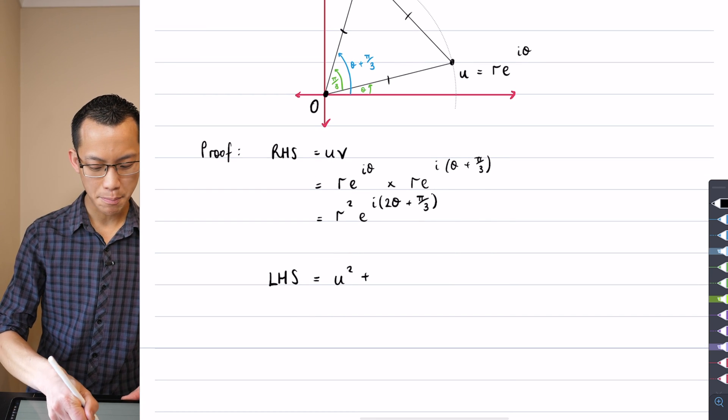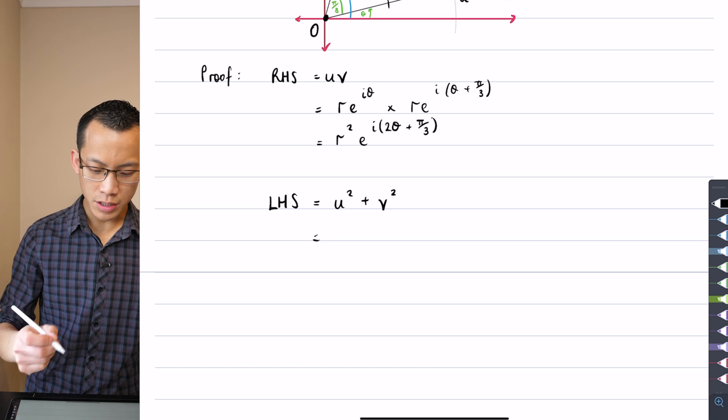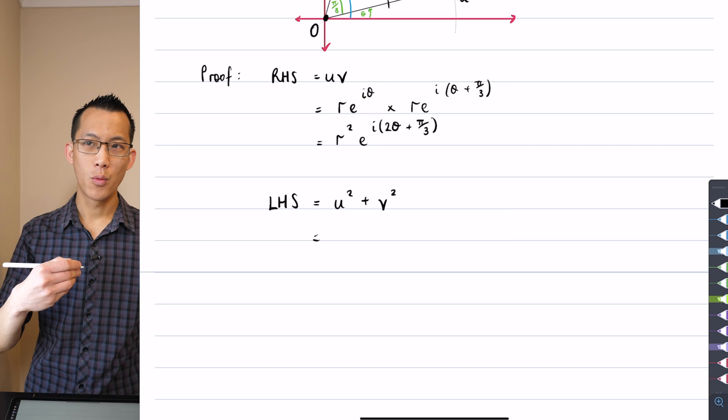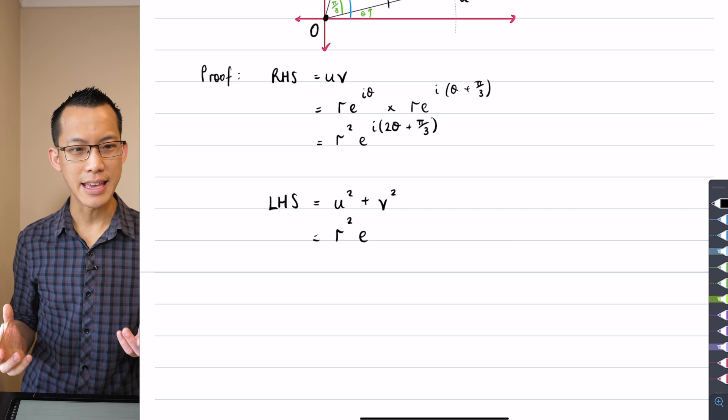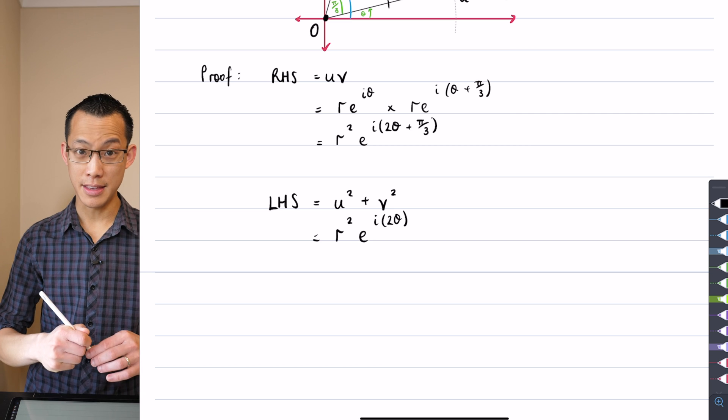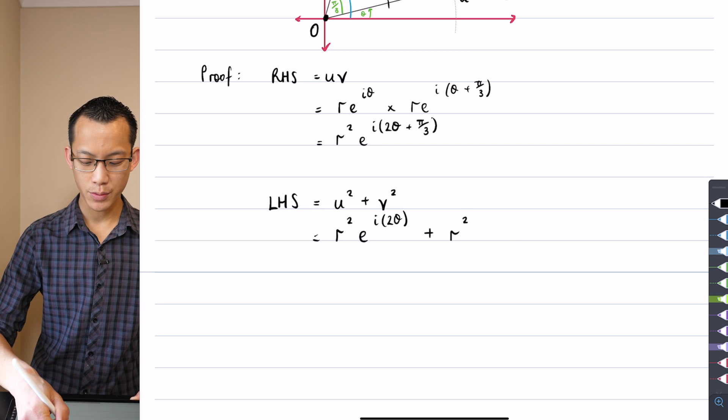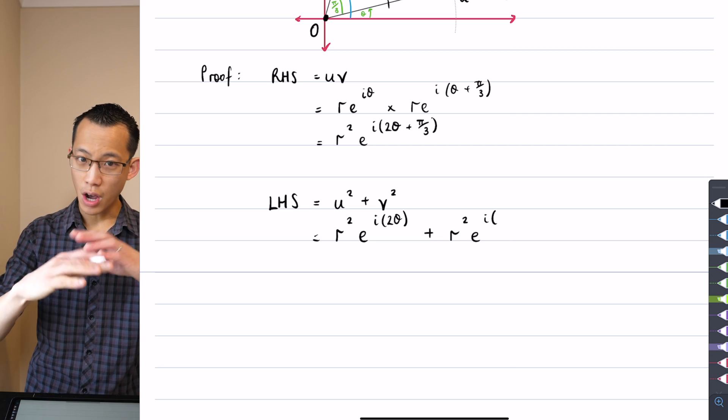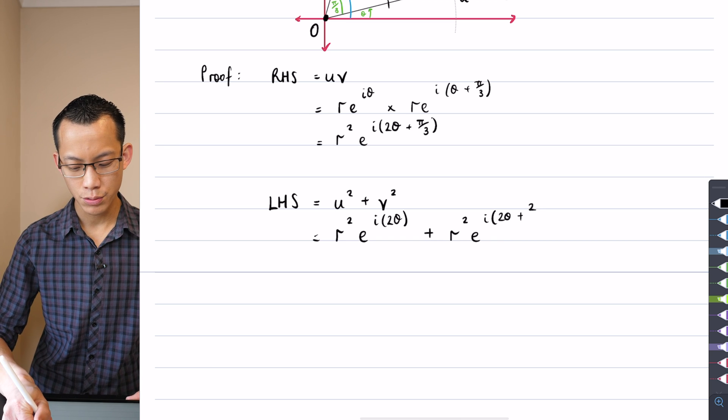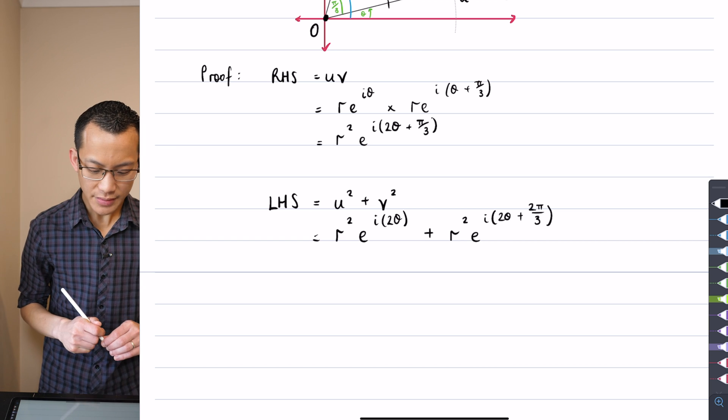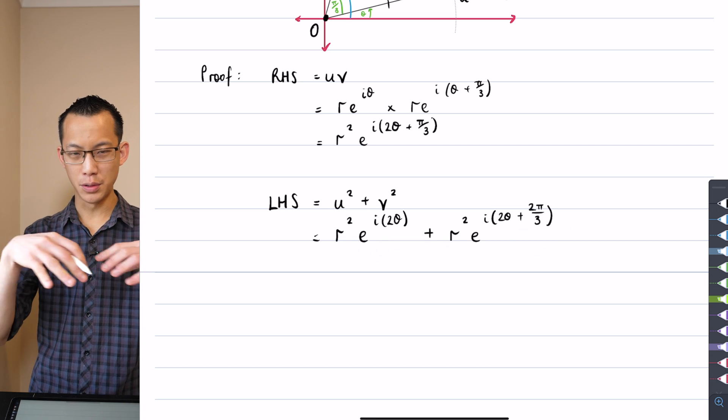Now I'm going to turn my attention to the left-hand side. We're considering U² + V². I'm going to take U and V independently and square them. When you square U, the modulus gets squared, so you get R². And when you square the exponential part, that's just doubling the angle - you get R² e to the i(2theta). For V squared, you get R² and the entire angle gets doubled, so that's R² e to the i(2theta + 2π/3). Now you can see why I started with the right-hand side first - left-hand side is a bit of a mess.